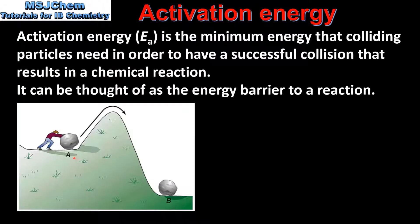In this diagram, to get the rock from A to B, this person needs to put in energy to get the rock over this hill. The energy that the person puts in to get the rock to the top of the hill can be thought of as the activation energy for the reaction. Without this addition of energy, the rock cannot get from point A to point B.